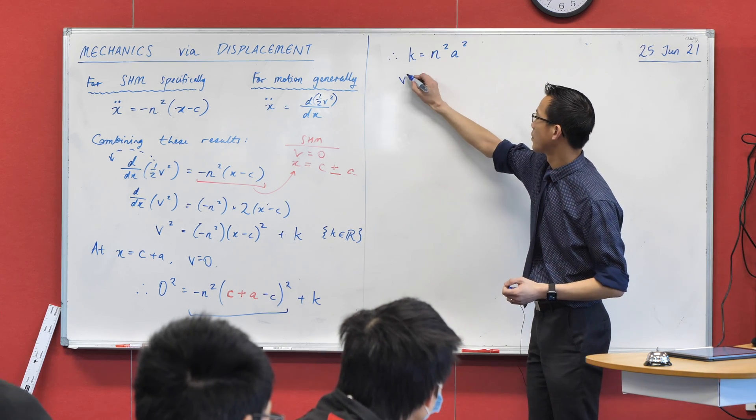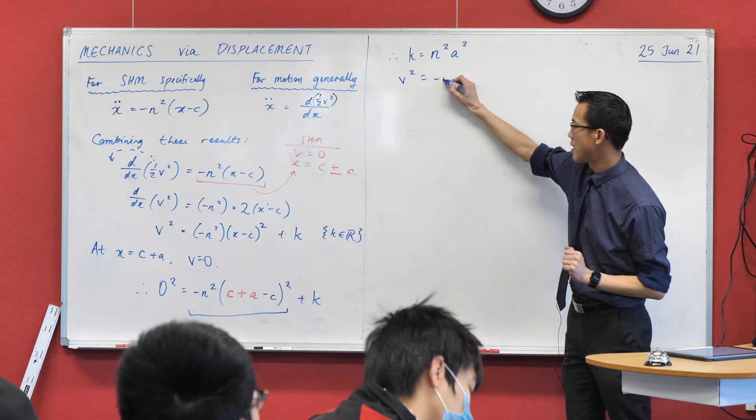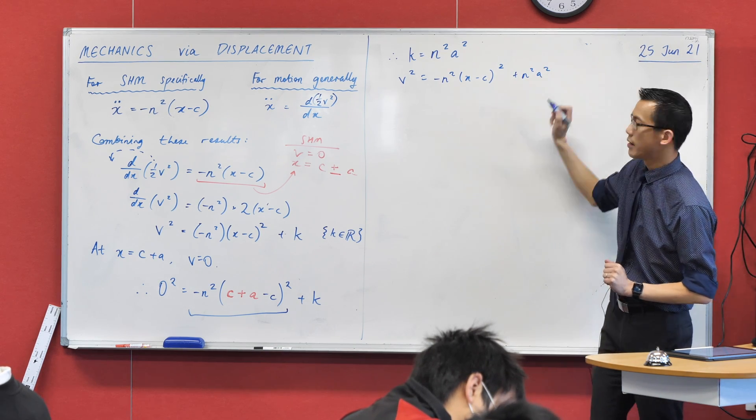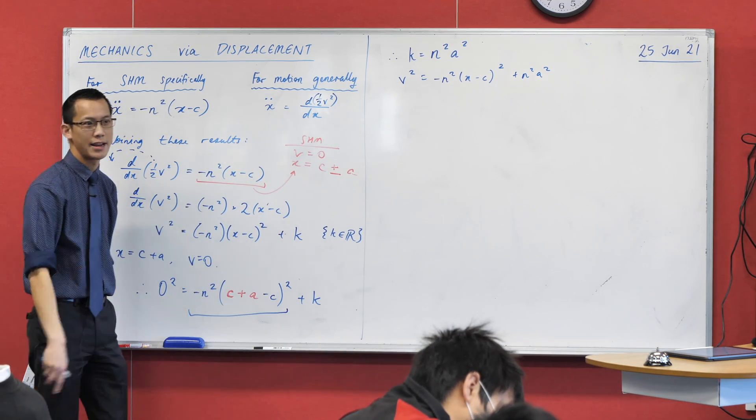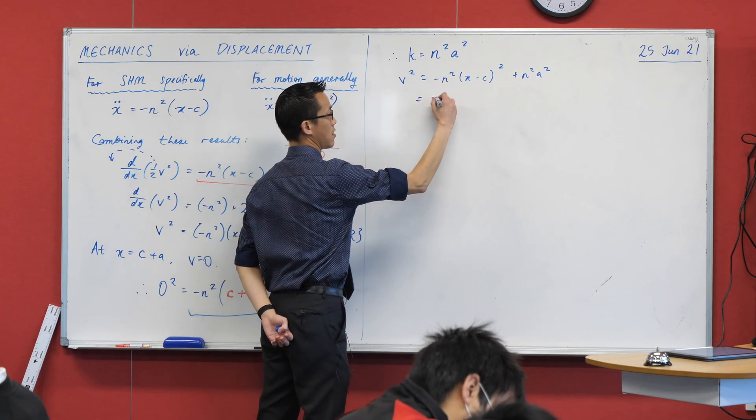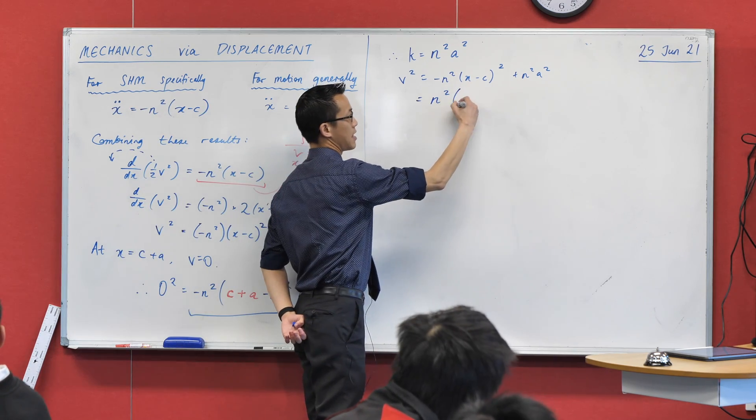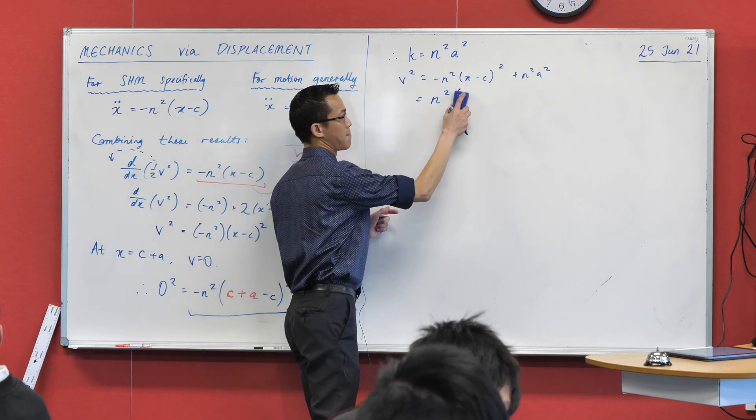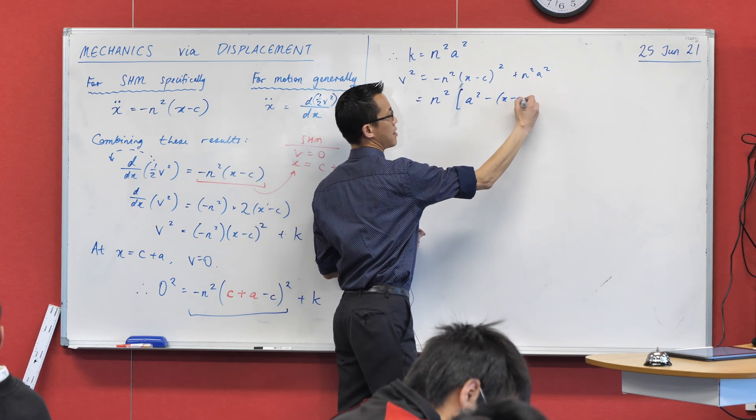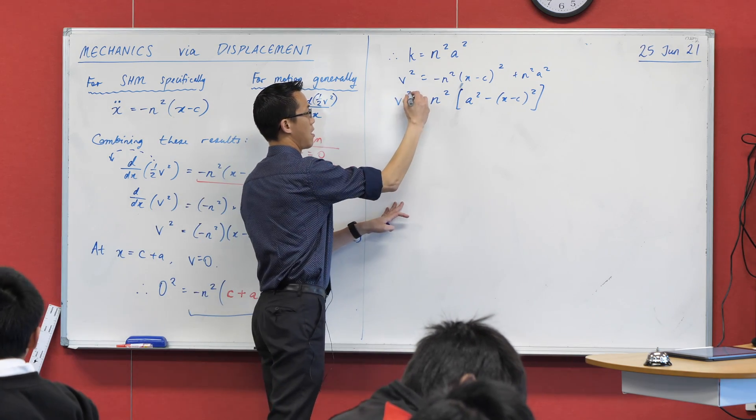What's our expression now for V squared? I'm going to substitute in this value of K, and then we can tidy up just a little bit. I've got this minus N squared X minus C squared that I got from integration, and now here comes N squared A squared. Any suggestions for how I can do a teeny bit of tiny up here? I'll factorize N squared. I'll factorize N squared, and while I'm at it, I'm also going to place this in a more sensible order for me. I'm going to place the positive term, the A squared, out the front, and then I've got this X minus C all squared on the other side. Are you happy with that? Does that look okay?